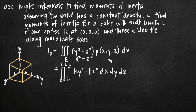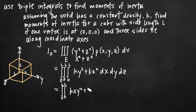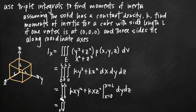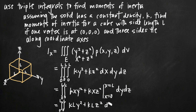Now we'll evaluate the integral for I_x. First, we integrate with respect to x, giving two integrals from 0 to l: kxy² + kxz², evaluated from x = 0 to x = l dy dz. Plugging in x = l gives kly² + klz², and plugging in x = 0 gives 0, so we simply have the integral of kly² + klz² dy dz.